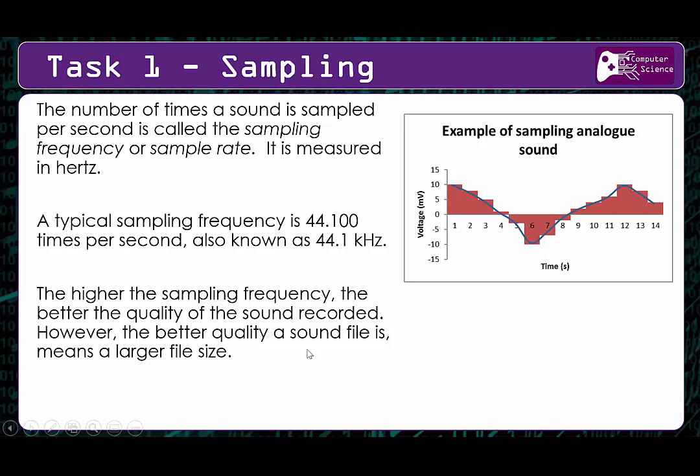A little more about sampling to finish off task one. The number of times a sound is sampled per second is called sampling frequency or sample rate, and it's measured in hertz. A typical sampling frequency is 44,100 times per second, also known as 44.1 kilohertz. The higher the sample frequency, the better the quality of the sound. You can sometimes choose the sample frequency when downloading music, which affects the sound quality.